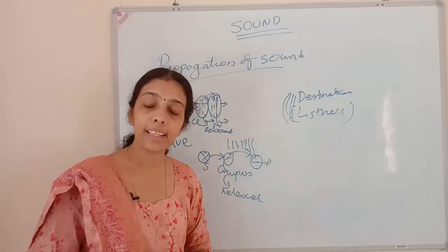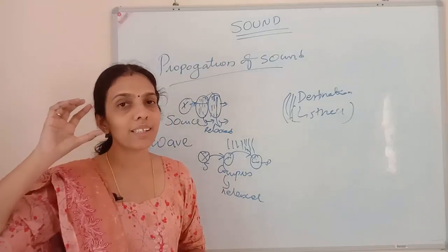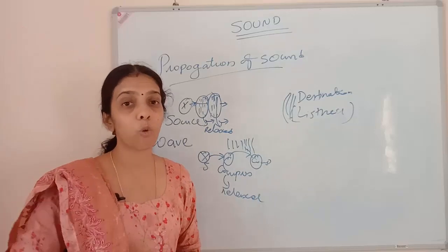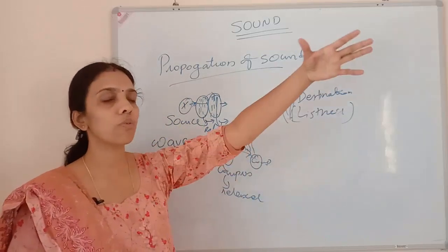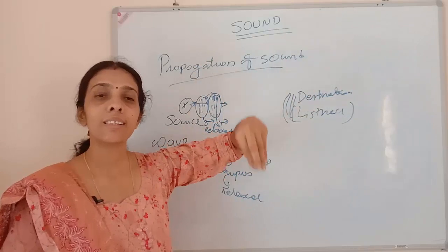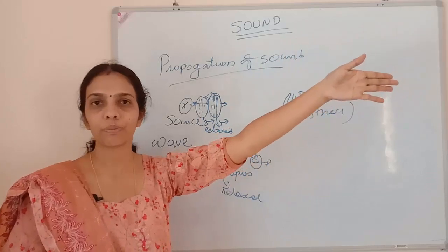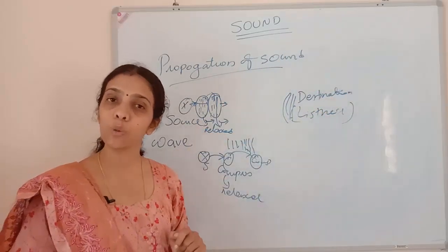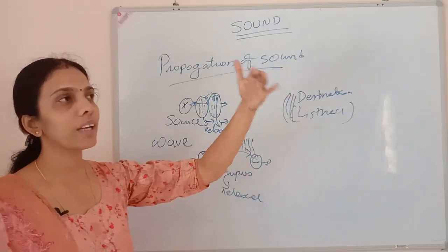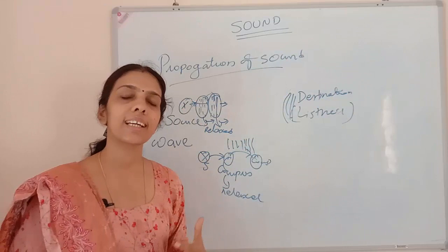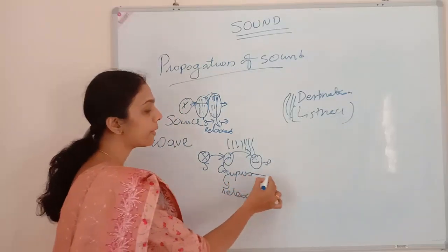That is the reason when we are far away from the source, the sound will be feeble, and when near the source it will be heard with a high voice. What is the reason? Because as the sound wave travels from the source to a far-away listener, it is handing over energy to each particle along the way. For compression and all, it uses some energy. That is why if a listener is far away from the source, only a feeble voice will be reaching them.